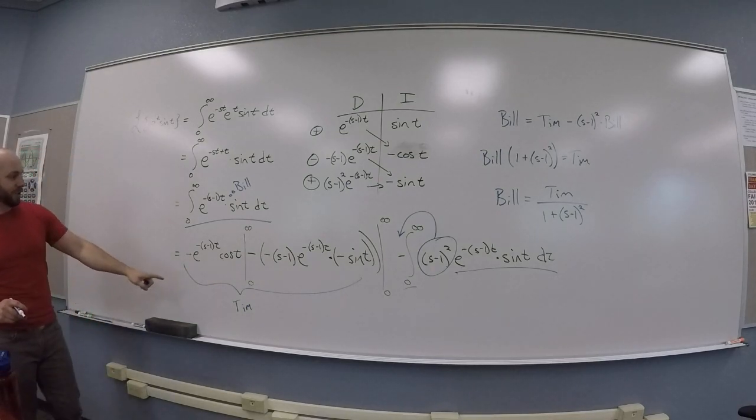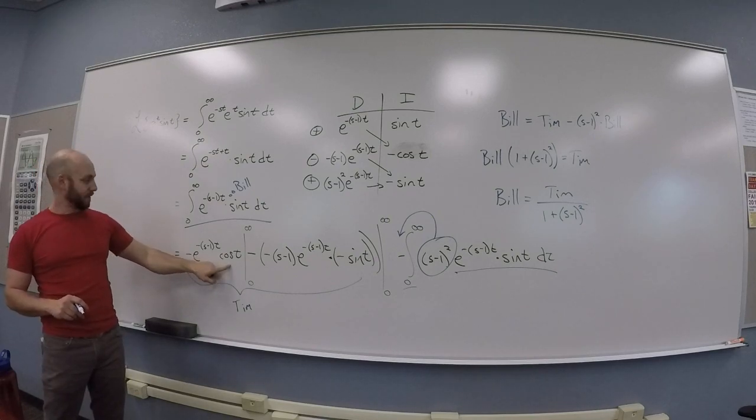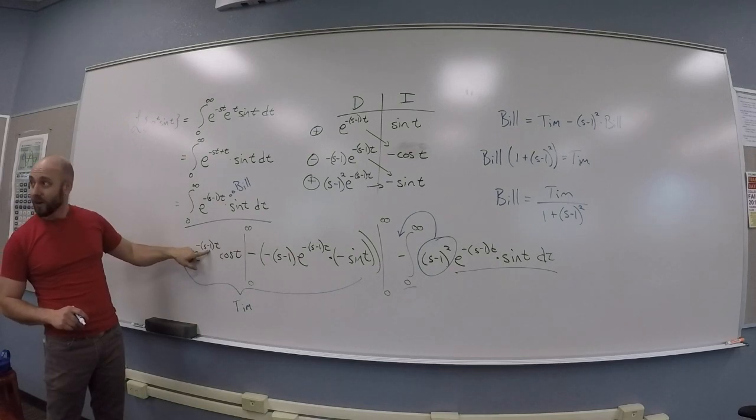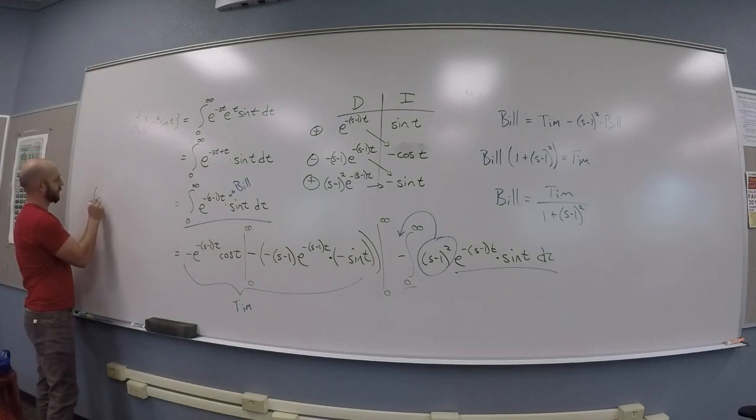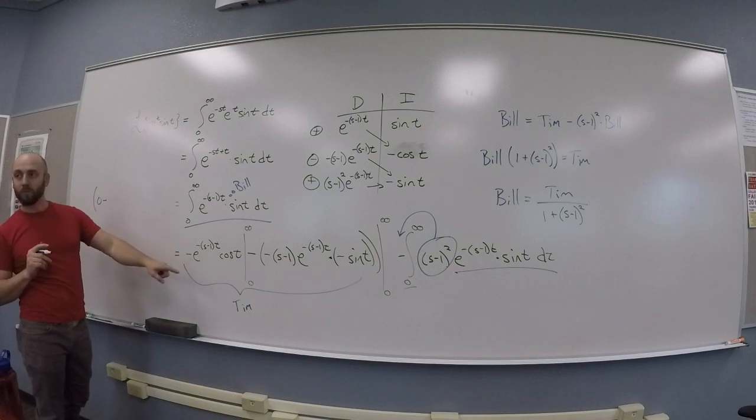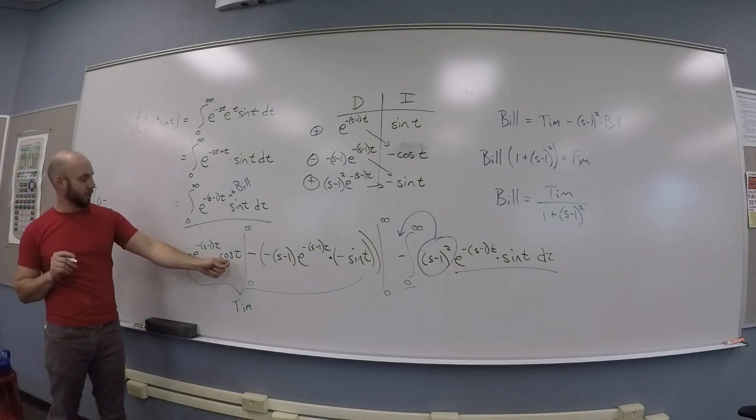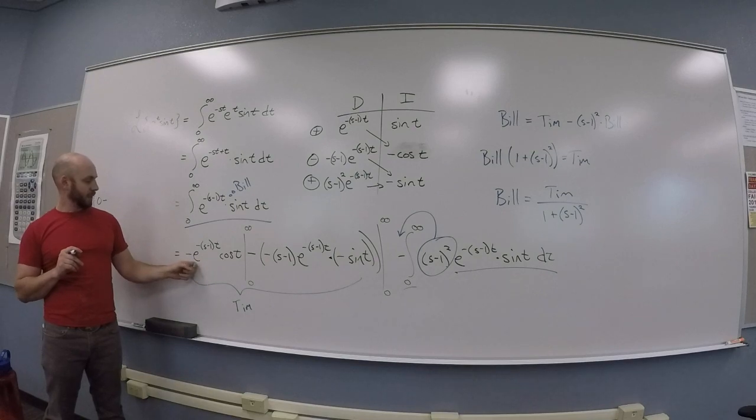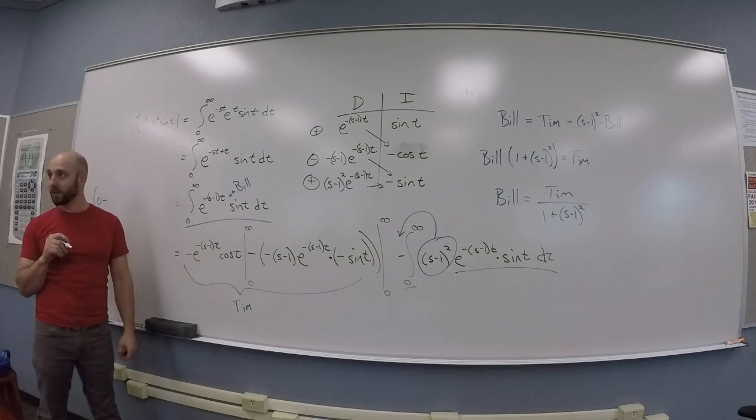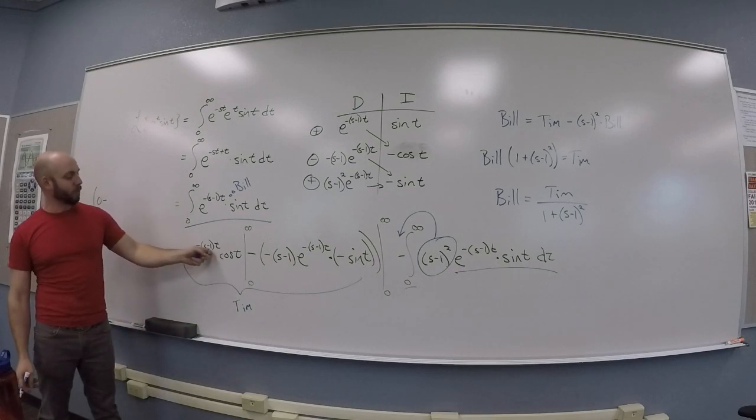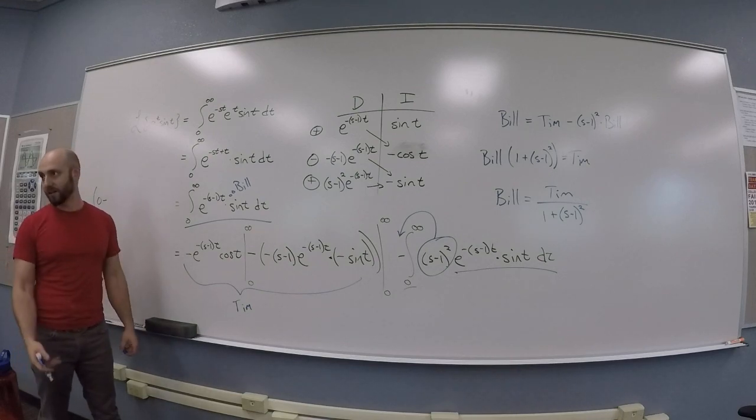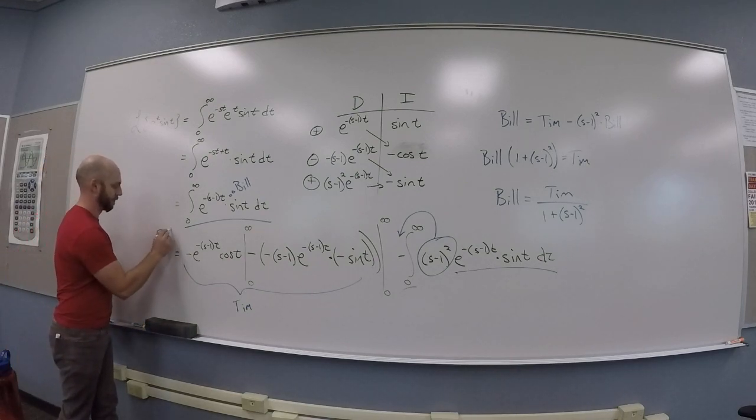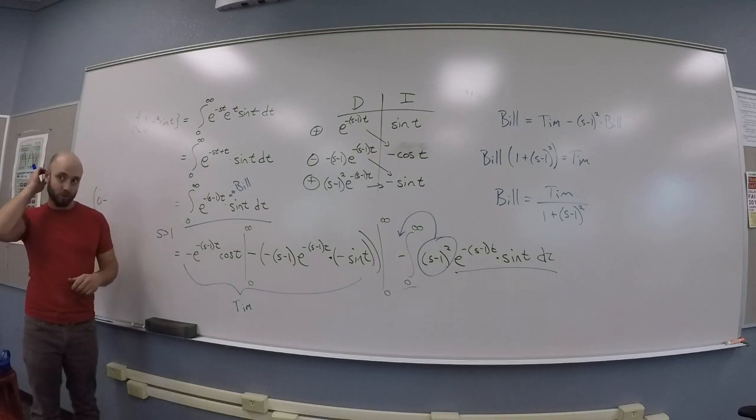So, if I want to know what Tim is, if I plug in T equals infinity into this thing, you get plus or minus 1. I get zero. Nothing. In this piece. So, I got first piece is 0 minus. Plug in 0. Cosine of 0 is 1. S has to be bigger than 1. Yeah. You guys see that? So, that's actually a nice caveat. S has to be bigger than 1. It only converges when S is bigger than 1.